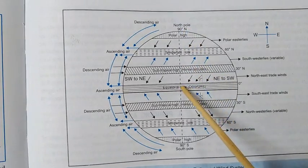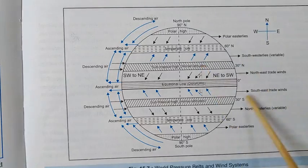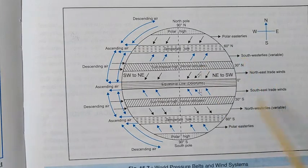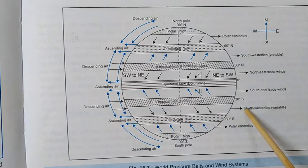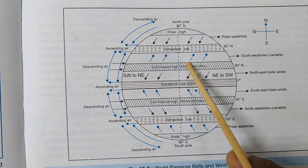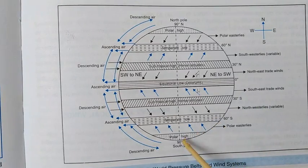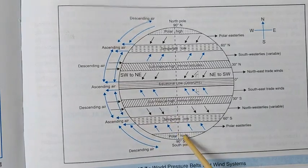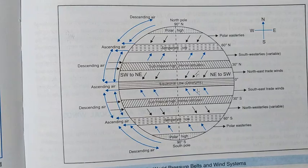Here is the diagram of pressure belts and the wind system. This is the equatorial low pressure belt, also called the doldrums. This is the subtropical high pressure belt, called the horse latitude. This is the temperate low in both hemispheres, and this is the polar high pressure belt at both poles. Between these pressure belts, winds blow from high pressure to low pressure.